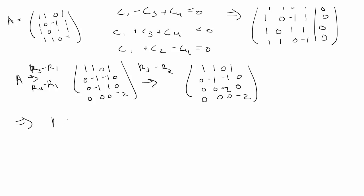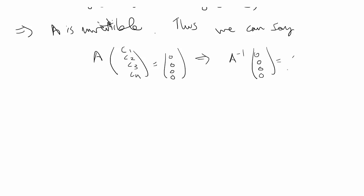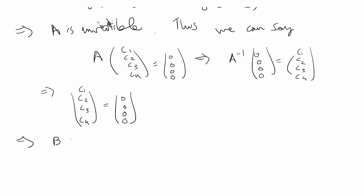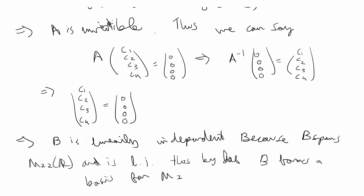We can go further and say A is invertible from the above row reduction. Thus, since we had the equation A times [C₁, C₂, C₃, C₄]ᵀ equal to the zero vector, we can multiply both sides by A inverse: A inverse times zero gives zero, so [C₁, C₂, C₃, C₄]ᵀ equals zero. So we've proved that B is linearly independent. Because B spans M₂₂(ℝ) and is linearly independent, by definition B forms a basis for M₂₂(ℝ). And we're done with our proof.